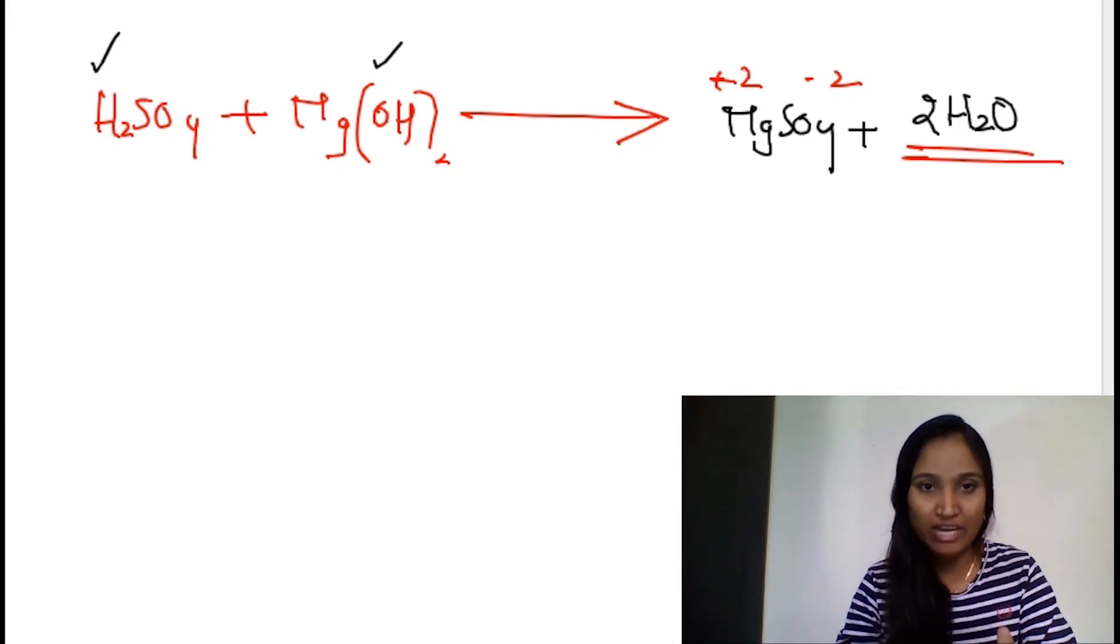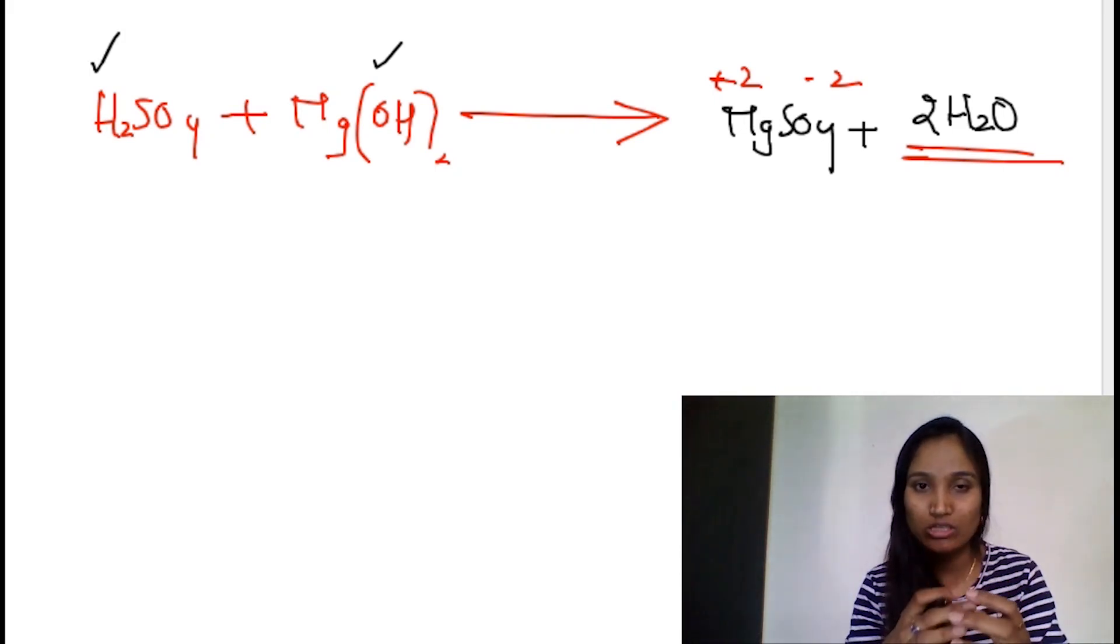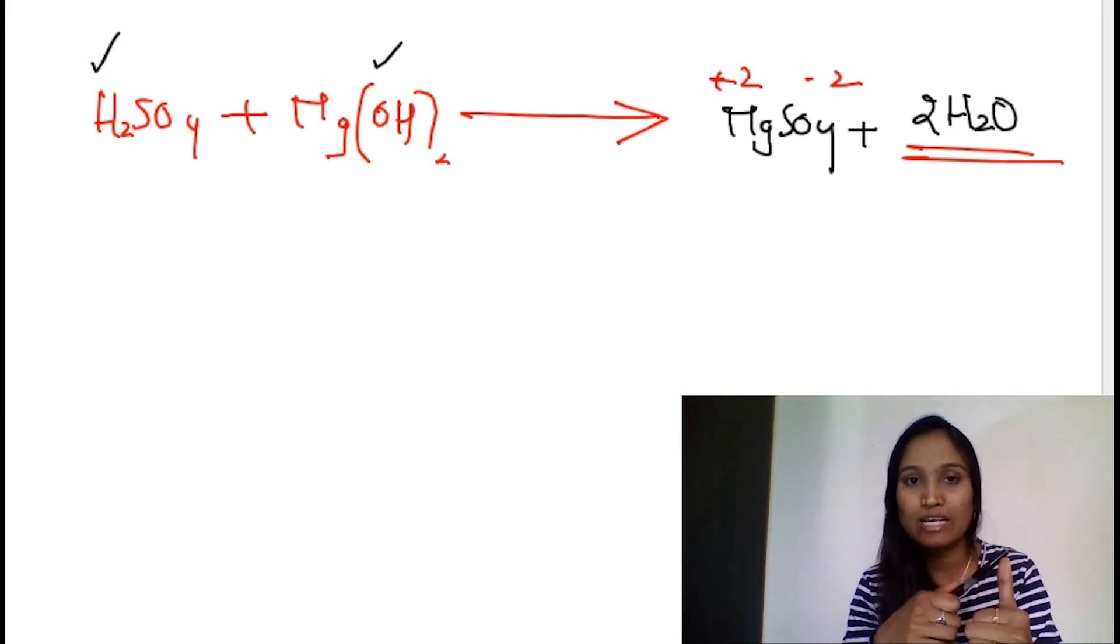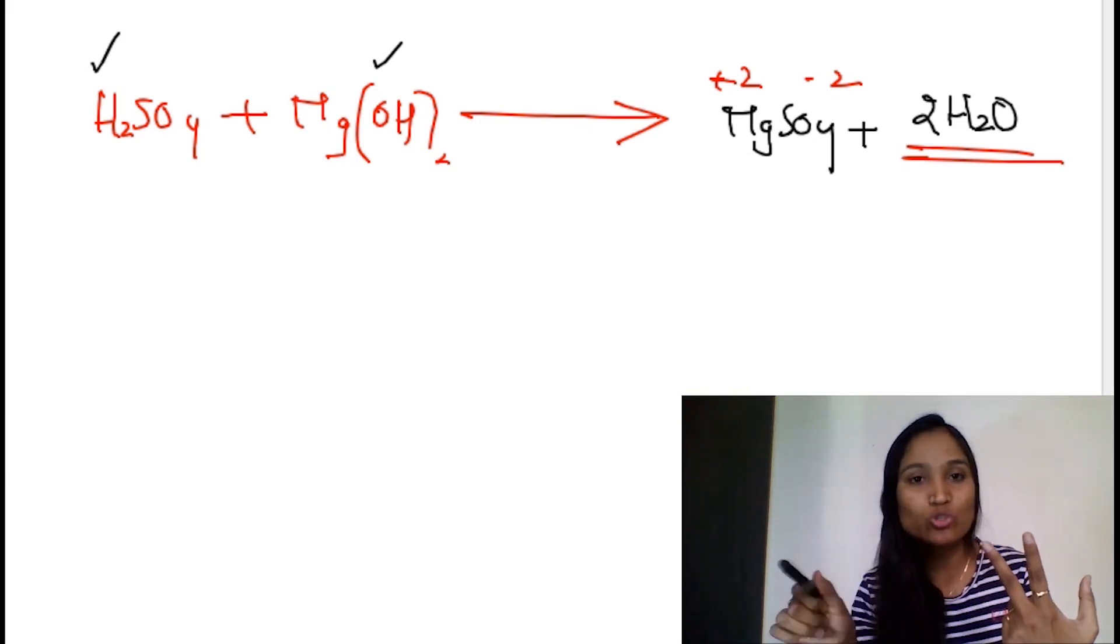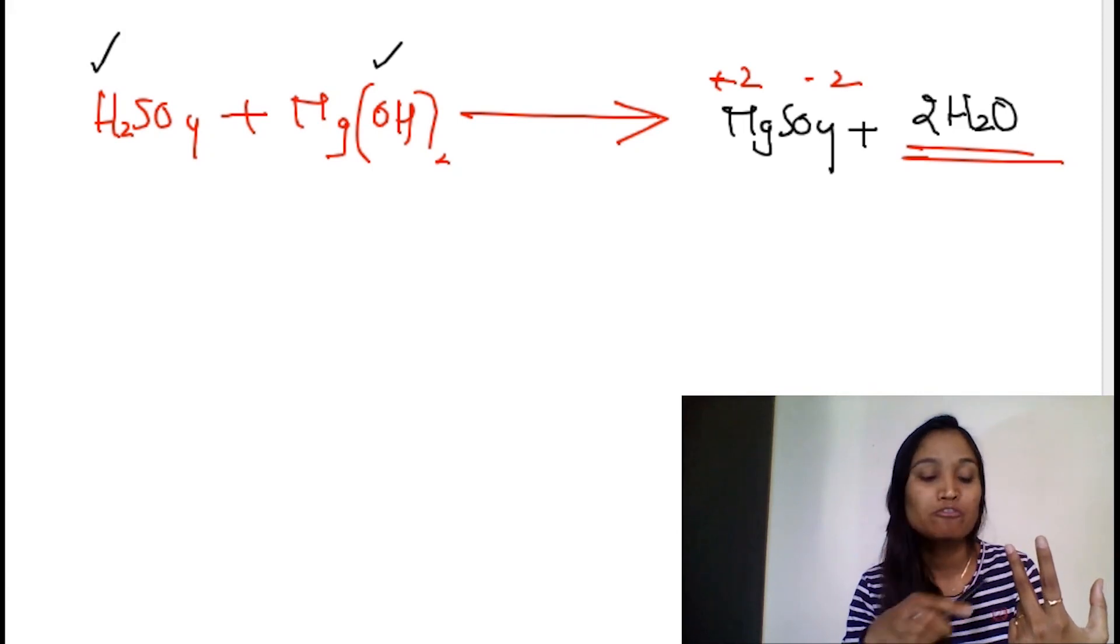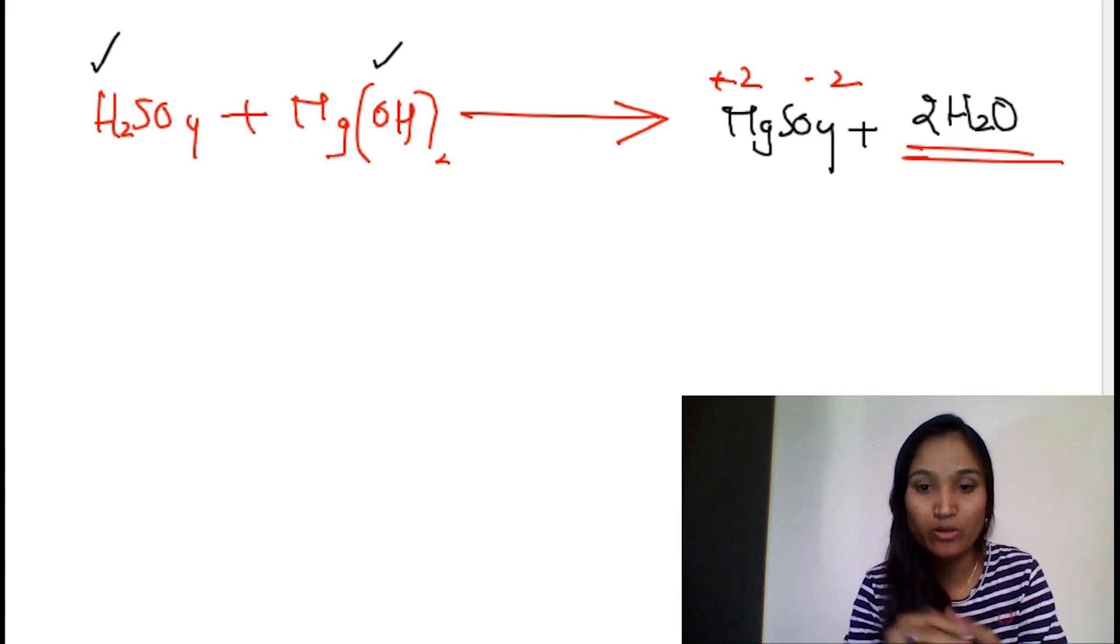Let us summarize whatever we have done today. We have understood the vocabulary essential to learn this chapter: definition of acid and examples, definition of base and examples, definition of salt and examples, along with two neutralization reactions, followed by what is hydronium ion. These are the four points covered in today's video.